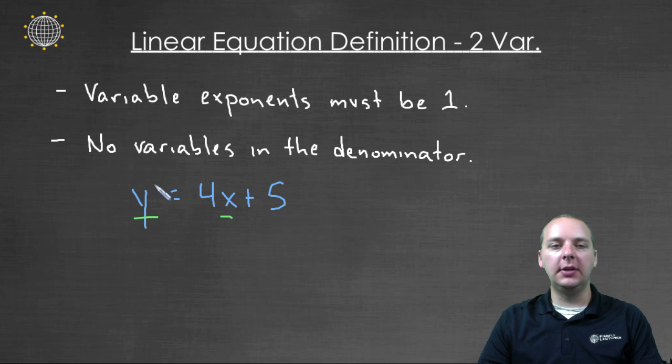The exponents on these are both one, y to the first and x to the first, and none of these variables are in a denominator. So that's it. That's the criteria in order to be called linear.